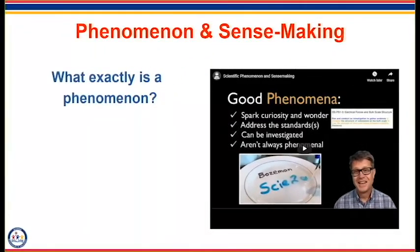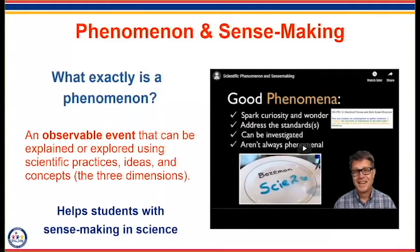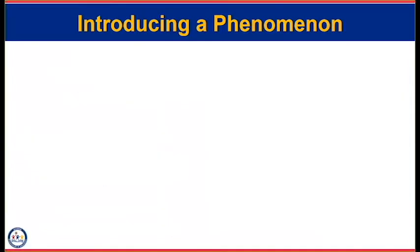Just a reminder about the definition that is in our standards: a phenomenon is an observable event, and the goal of using this is to help students with sense-making in science. What does this actually look like in the classroom? When I sit down to introduce a phenomena, I obviously need to start by looking at my standards, understanding the core idea and the content behind that standard, and once I've done that I can find a short video, a piece of data, lead a demonstration, or an exploration.